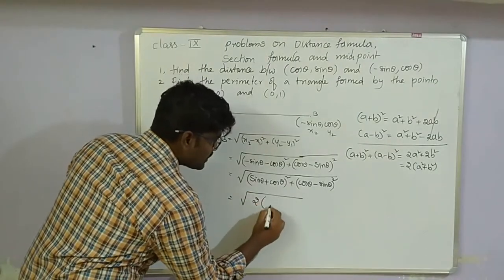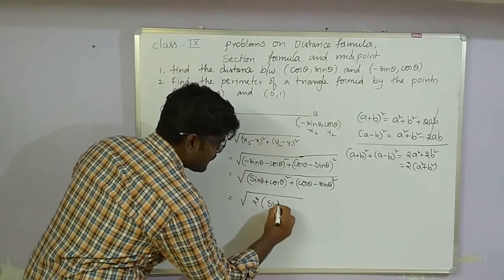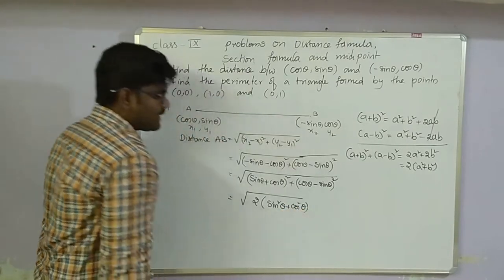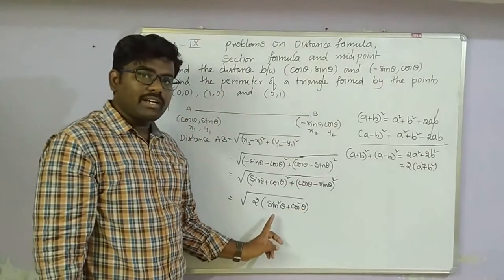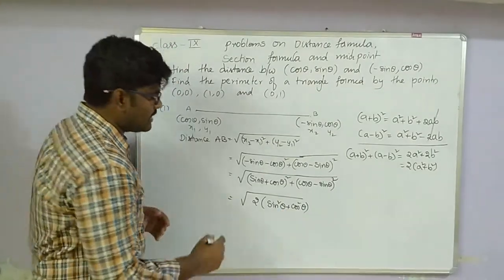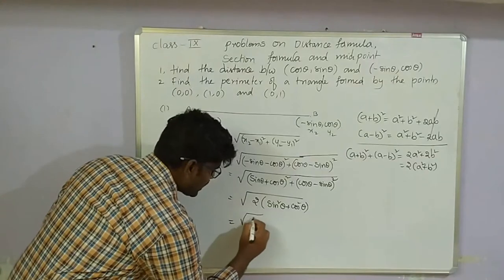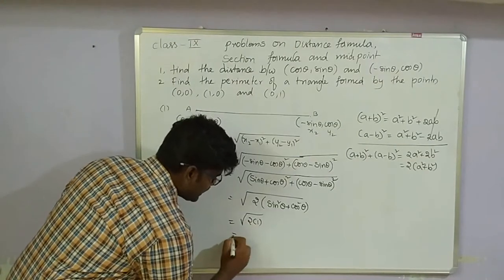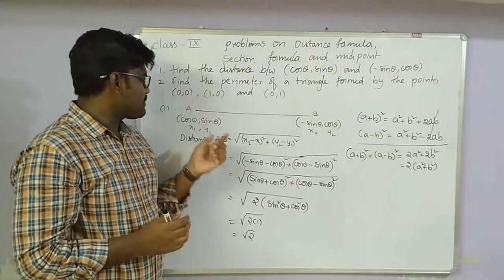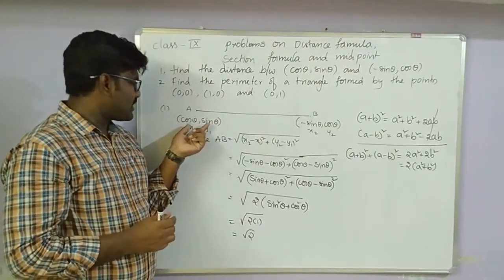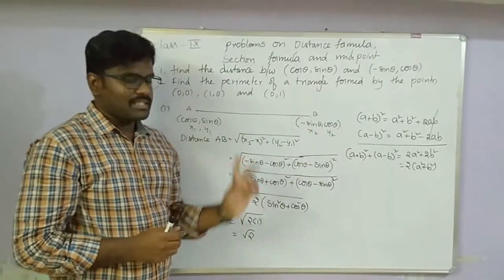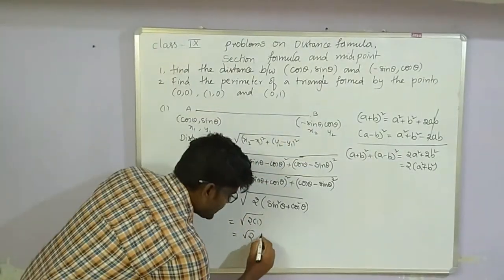Since sin²θ + cos²θ = 1 by the trigonometric identity, we get √[2 × 1] = √2. Therefore, the distance between (cosθ, sinθ) and (-sinθ, cosθ) is √2 units.